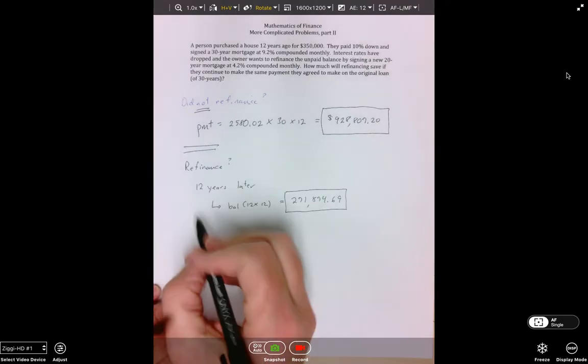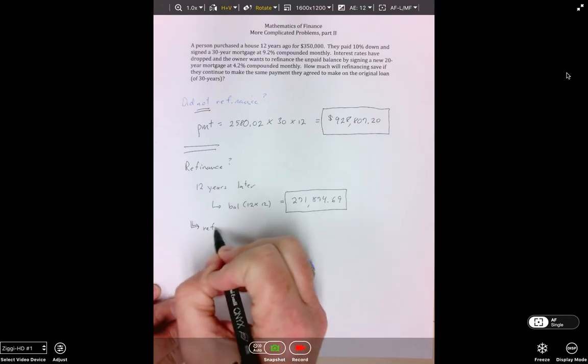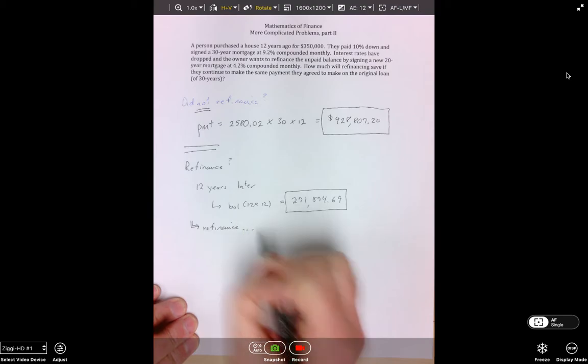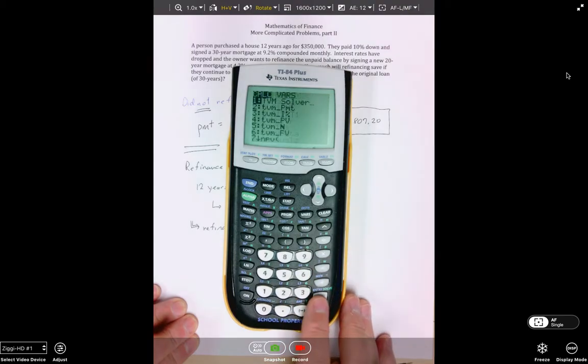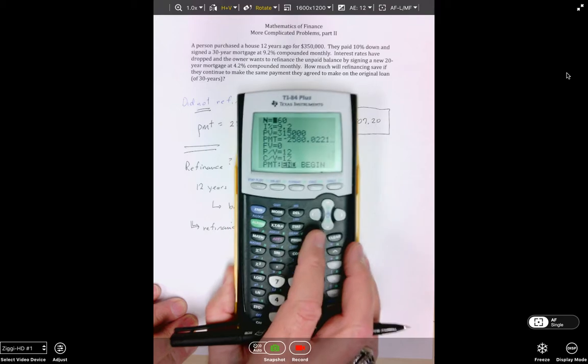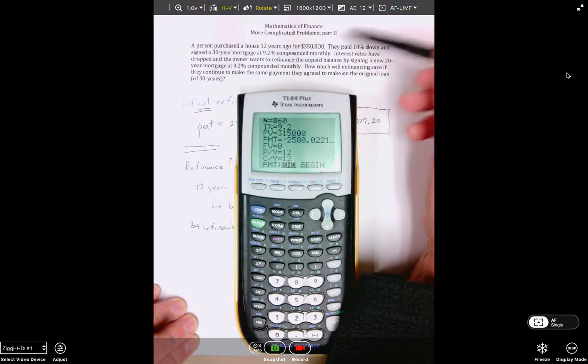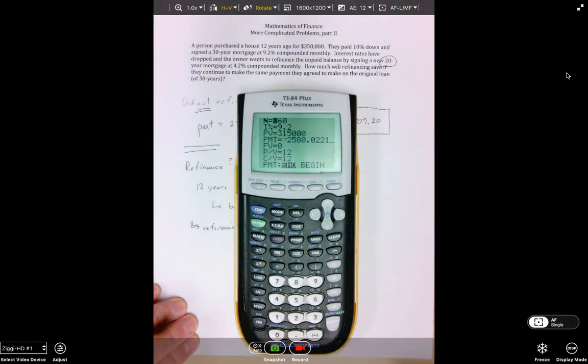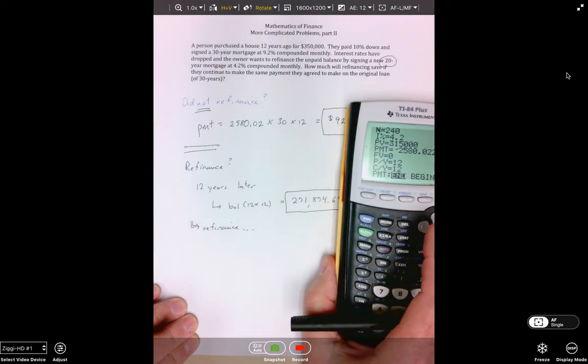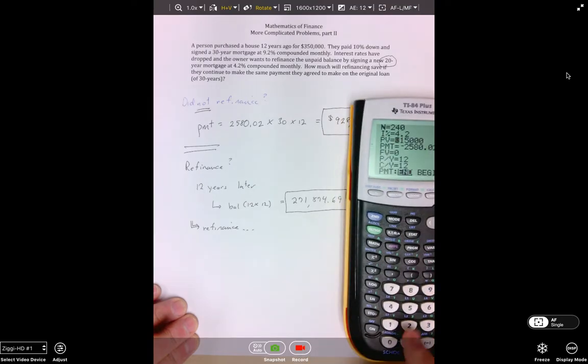So now we're going to refinance. I just need to put this amount in TVM Solver. You can see that they are refinancing on a new 20-year mortgage. Their interest rate has dropped significantly from 9.2 to 4.2, so it's going to save them a lot of money. They are going to be refinancing $271,874.69.